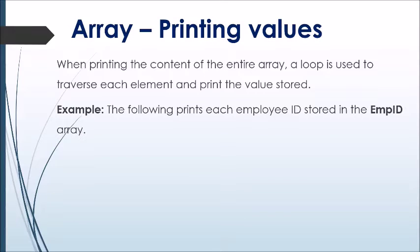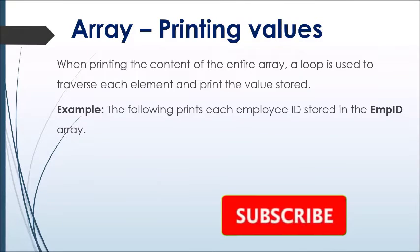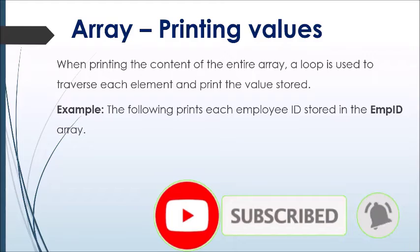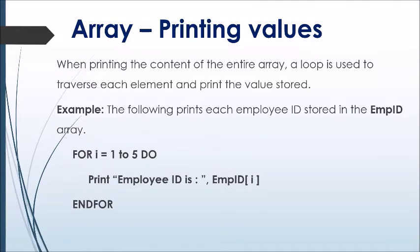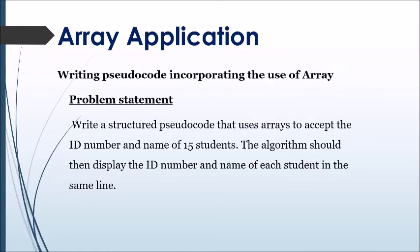Array printing values: when printing the content of the entire array, a loop is used to traverse each element and print the value stored. The following example shows how to print each employee ID stored in the array 'empID'. A for loop with counter variable i enables traversal of the array. Each time the loop executes, the line 'Employee ID' followed by the ID at the specified location is shown. Once all five IDs are displayed, the keyword 'end for' terminates the loop.